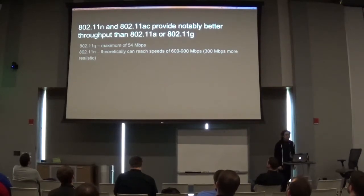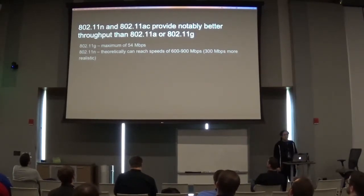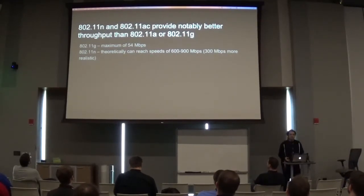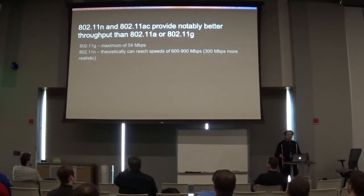Why is this relevant? Well, 802.11n and 802.11ac provide notably better throughput than 802.11a and 802.11g. 802.11a and g are the two older versions of the protocol. 802.11n and ac built off of a and g and expanded to provide these enhanced capabilities.